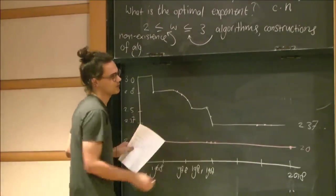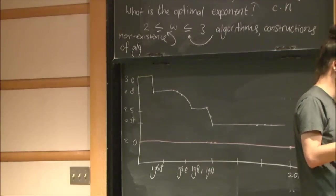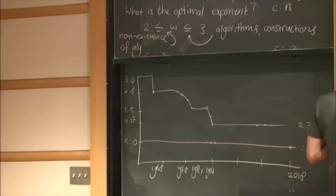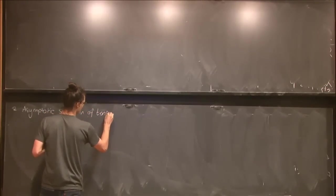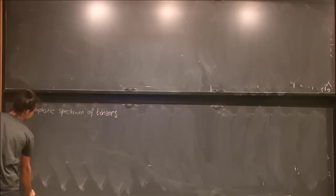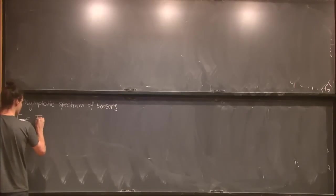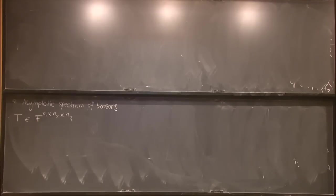So this theory of Strassen is called the asymptotic spectrum of tensors, or the theory of asymptotic spectrum of tensors. So it's about tensors. So a tensor for me now in this talk is simply a three-dimensional array of numbers in the field. So it's an element of this space. That's indexed by three indices, by triple of indices.